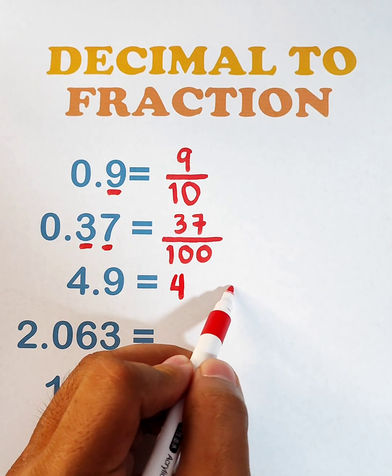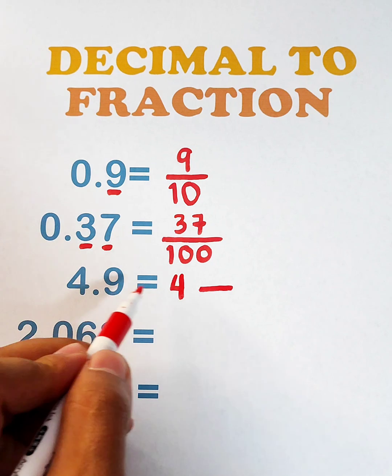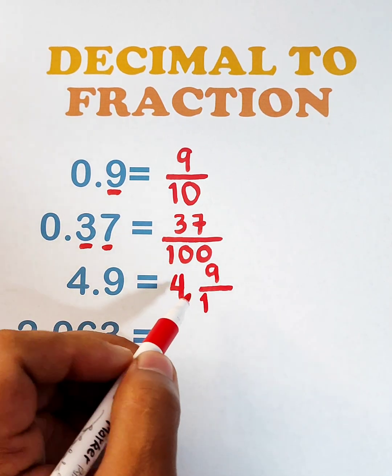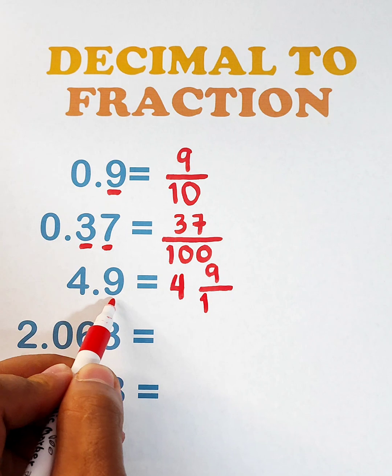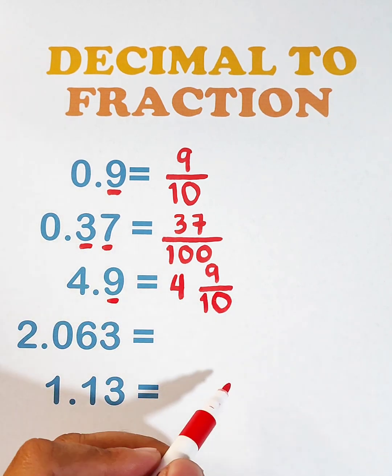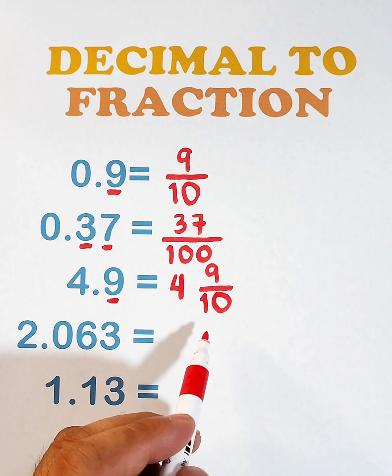And as for the numerator, copy this 9, put 1 here, and then count the number of decimal places, 1. As you can see, we have 1, 0 here. And the answer is 4 and 9 over 10.